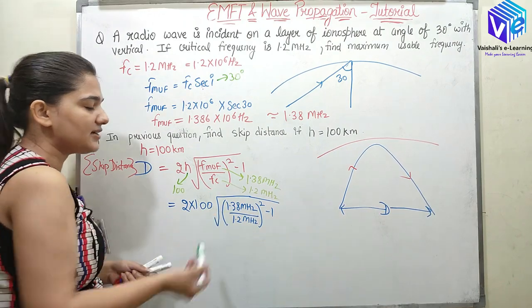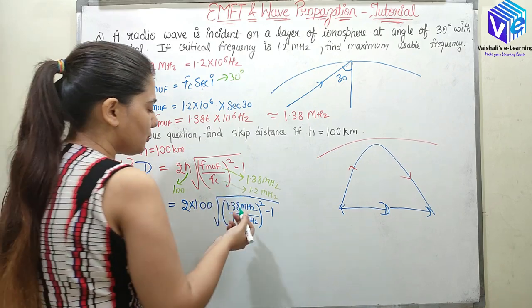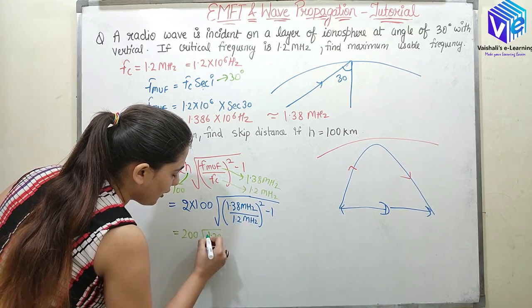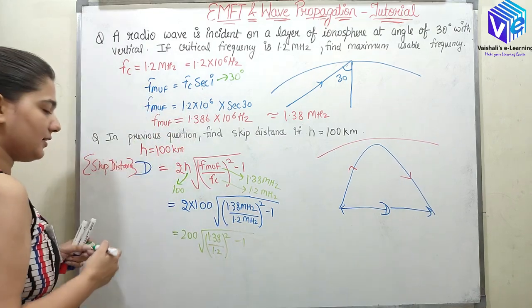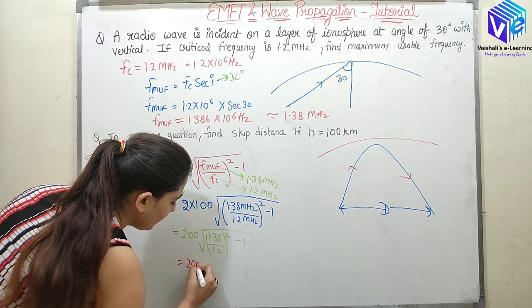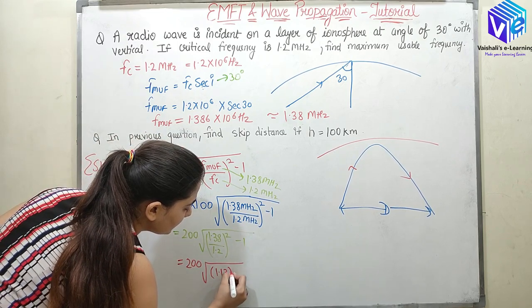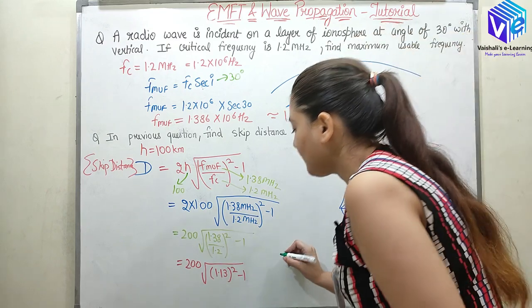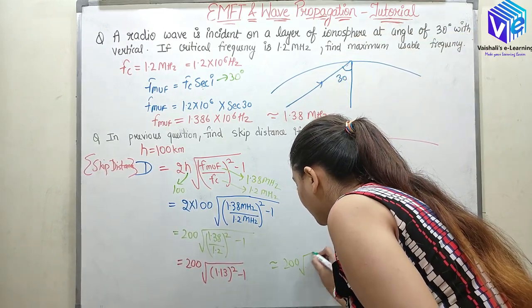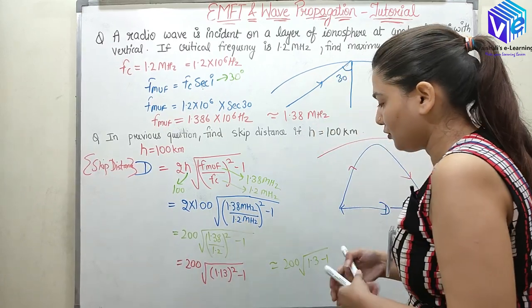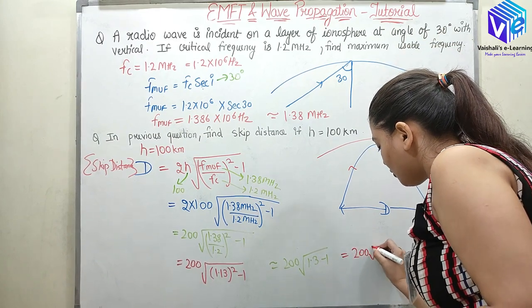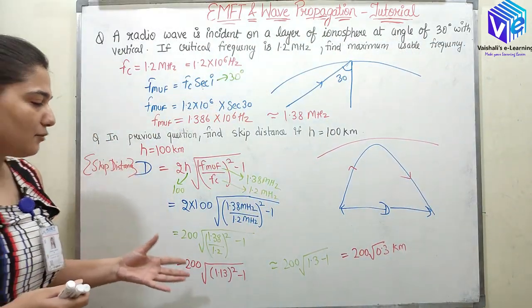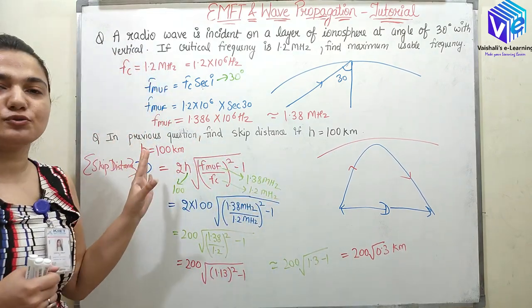So Fmuf/Fc which means 1.38 megahertz upon 1.2 megahertz, squared minus 1. Now megahertz is 10^6. In denominator also we have 10^6, it will get cancelled out. And here I will be having 200√[(1.38/1.2)² - 1]. So 1.38/1.2 will come out nearly equal to 1.13, squared minus 1. What is 1.13 squared? It will be coming out to be nearly equal to 200√(1.3 - 1). So 200√0.3 kilometers is my skip distance.